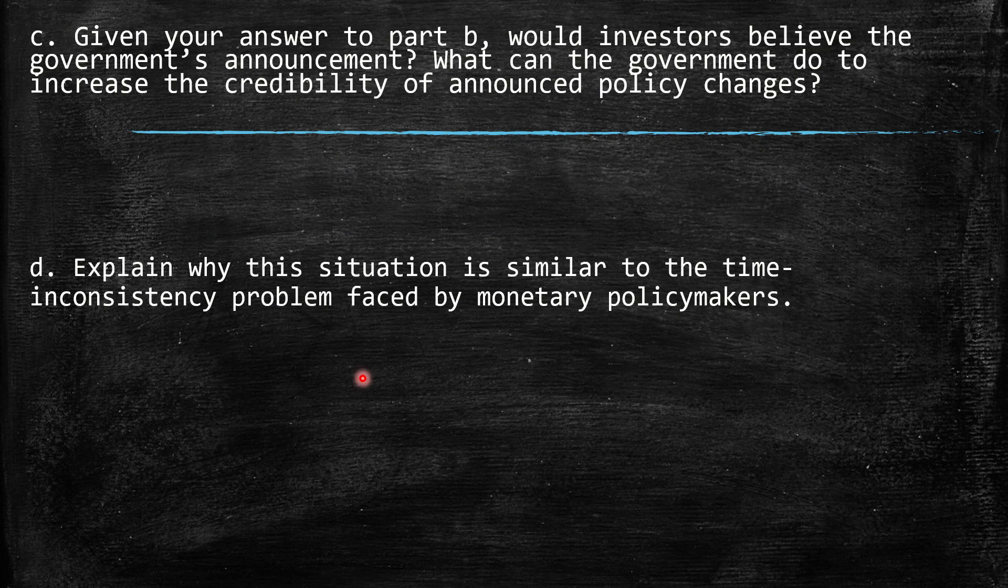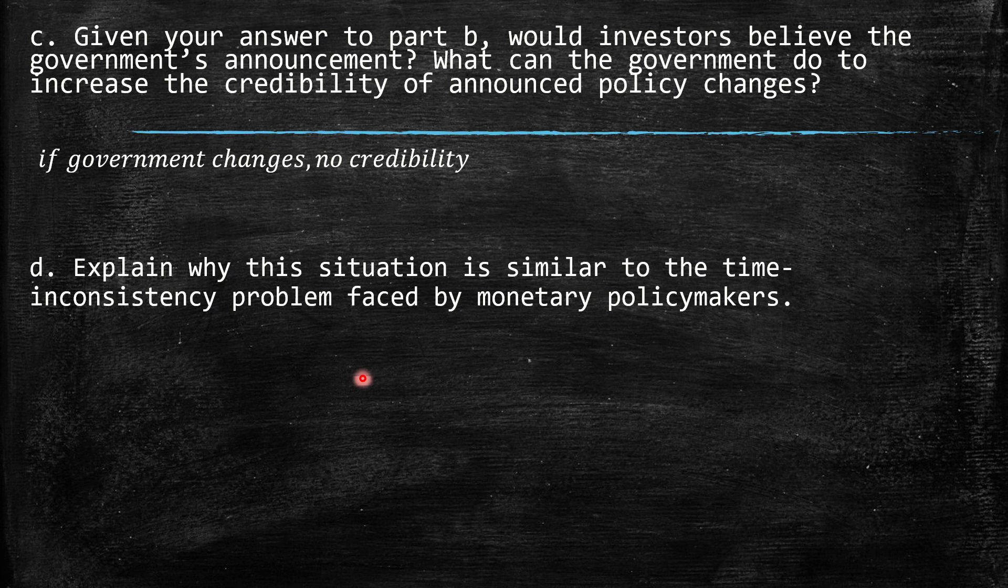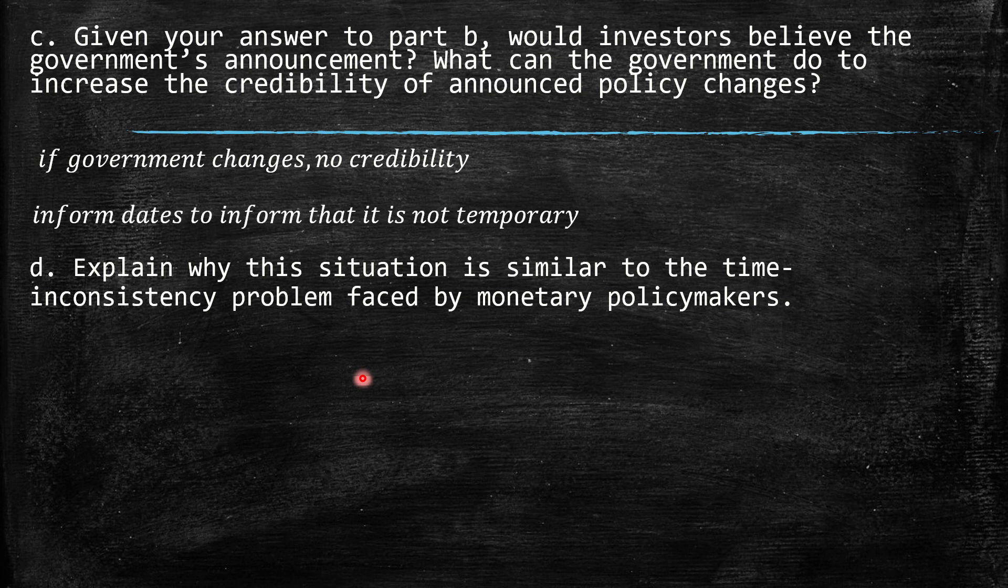Given your answer to part B, would investors believe the government's announcement? What can the government do to increase the credibility of announced policy changes? Well, naturally, if the government changes the policy, changes the taxes to the levels that they were back, definitely this should affect the credibility of government. So, definitely, this should be a bad way. Well, the only way to capture in some way the trust for investors should be to be really clear about what it's going to be performed. Informing dates, informing all information, when maybe this policy will change, if it's going to be temporary, if it's going to be in the long term, definitely should be better for the investors and for the policy as well.